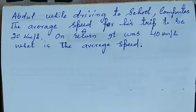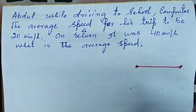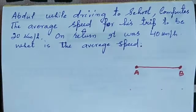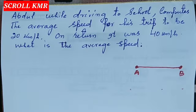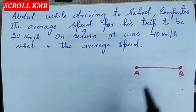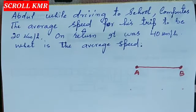Welcome dear students. We have another important question. Abdul, while driving to school, computes the average speed for his trip to be 20 kilometers per hour. Abdul is driving from home to school. Going to school, traffic is more so average speed is 20 km/h. Coming back from school, traffic is less so average speed is 40 km/h.